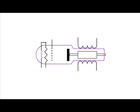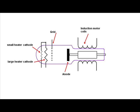If we look at the circuit diagram simplified, there are two cathodes, a control grid, the rotating anode and the external coils which form the induction motor.